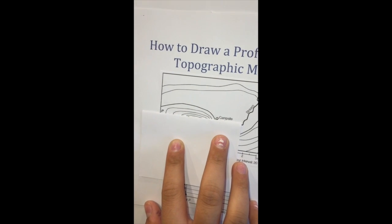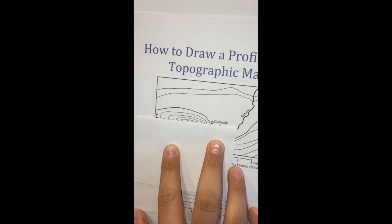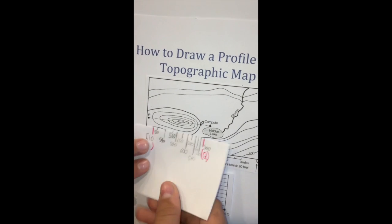The contour lines will run through your scrap paper. You will need to make a small mark wherever the contour lines cross the scrap paper and add the value. Like this.